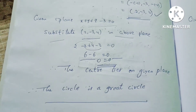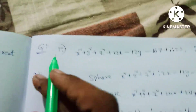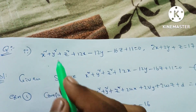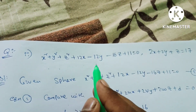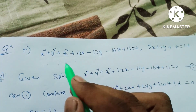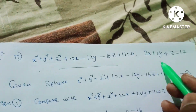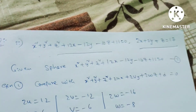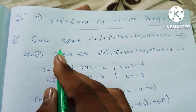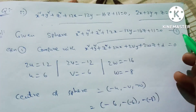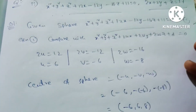Second question: x² + y² + z² + 12x - 12y - 16z + 11 = 0, along with a given plane equation. We need to determine whether the intersection is a great circle or a small circle. We compare this sphere with the general form.